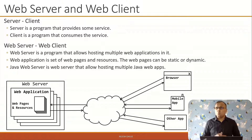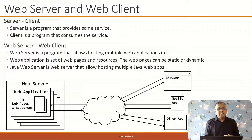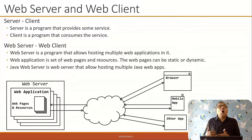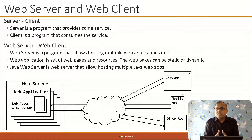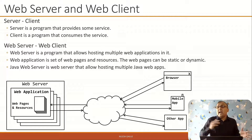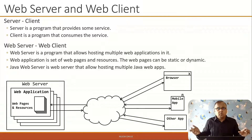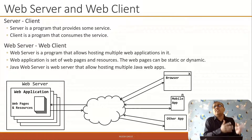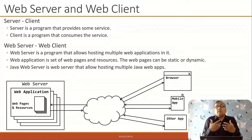A web application is a set of web pages and resources and services. These web pages can be either static or dynamic. Static web pages are simple HTML pages kept on the server — whenever requested by the client, they are served as-is with no processing done on the server side. This is similar to other resources like JS files, CSS files, image files, or icon files.